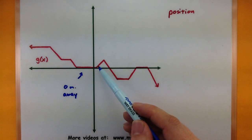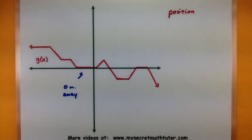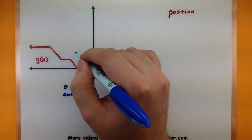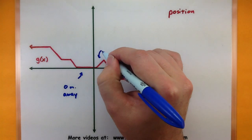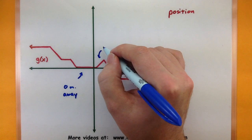We have places where the graph could be going up and it could be going down. This is telling us whether we're moving away from our starting point or moving towards our starting point. So this one, my distance is increasing, so I'm actually moving away.